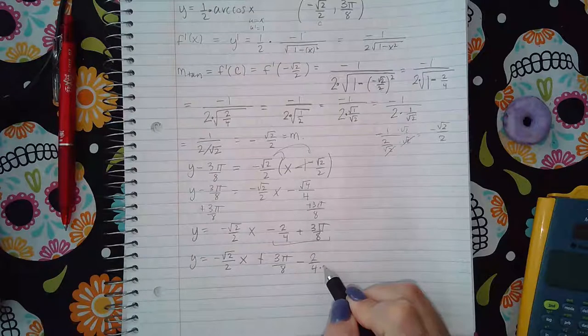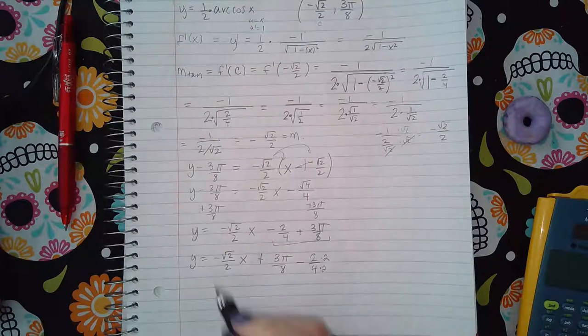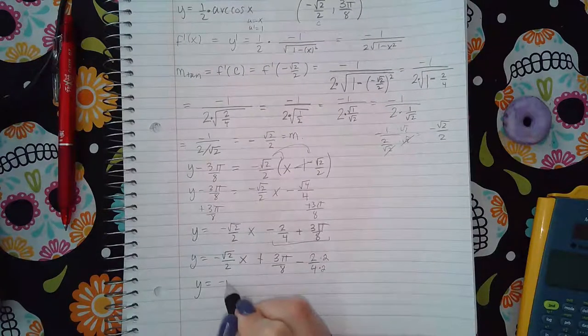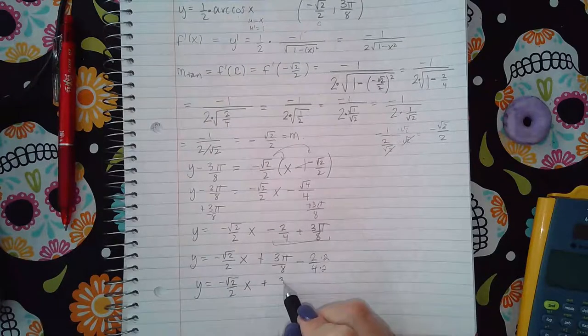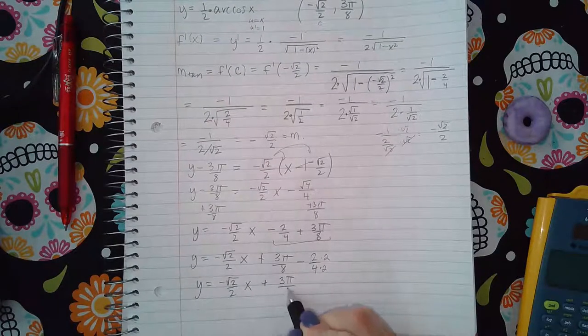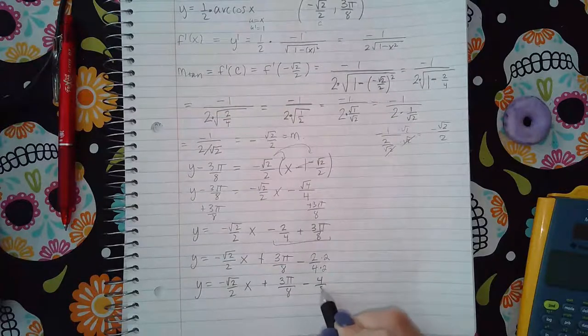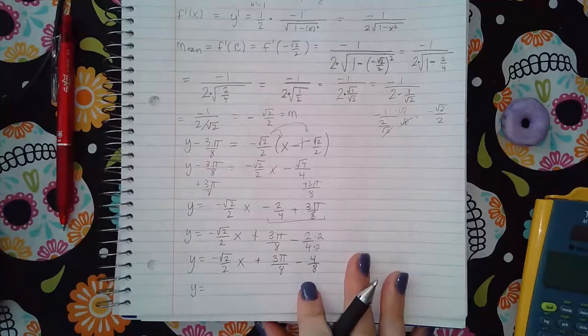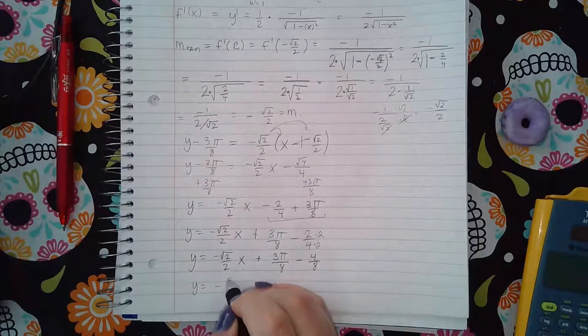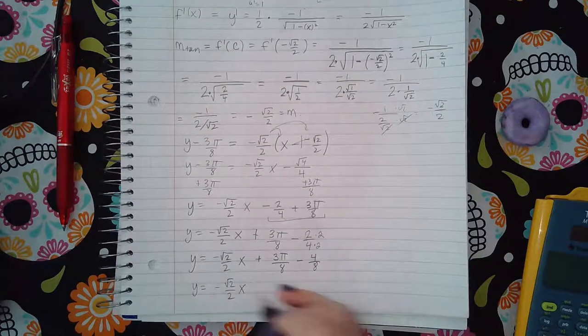Just keep that sign with that guy and that sign with that guy. And then I do want to have a common denominator, so I'm going to multiply by two there so I can get that over eight. And so then we have three pi over eight minus four over eight, which means I can write that as a single fraction.